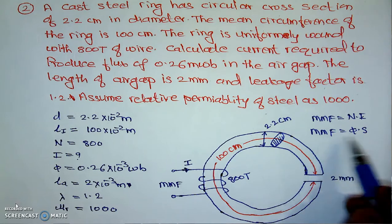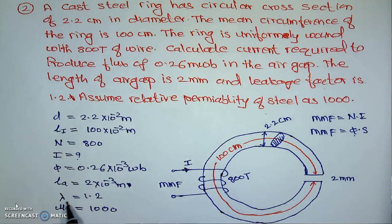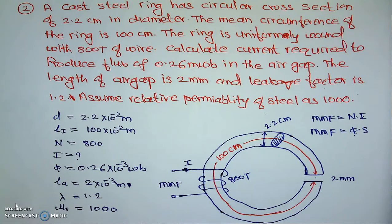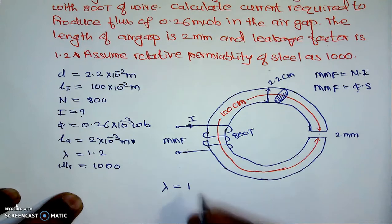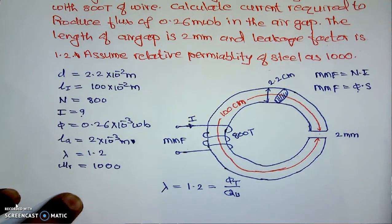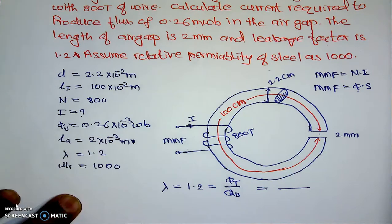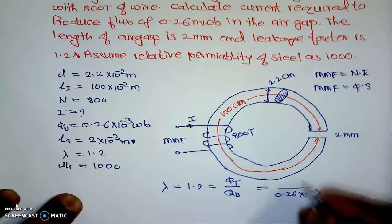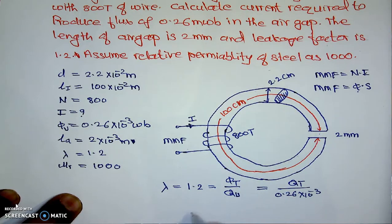The flux is given, but since lambda is given we have two fluxes: the useful flux in the air gap φ_u, and the total flux φ_t. Lambda equals φ_t divided by φ_u, which is 1.2. So φ_t = 1.2 × φ_u = 1.2 × 0.26 × 10⁻³.